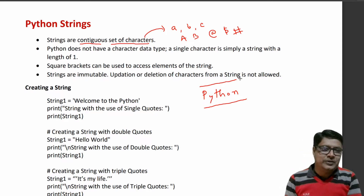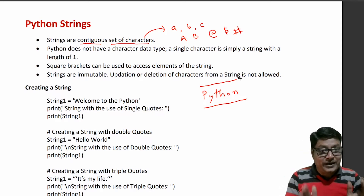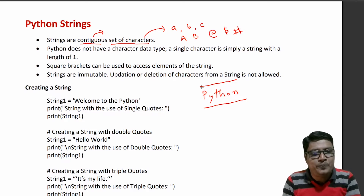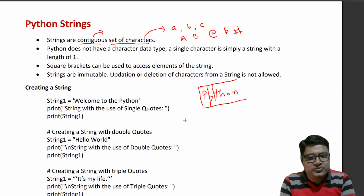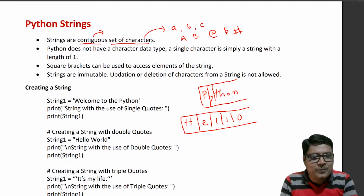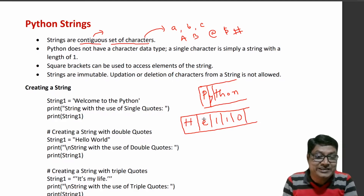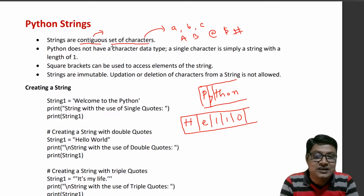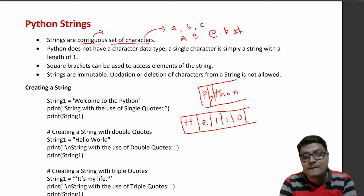What is contiguous? Contiguous means memory allocation. If I have a string like 'hello', the characters H, E, L, L, O are stored in contiguous memory locations. That is why strings are called a contiguous set of characters.